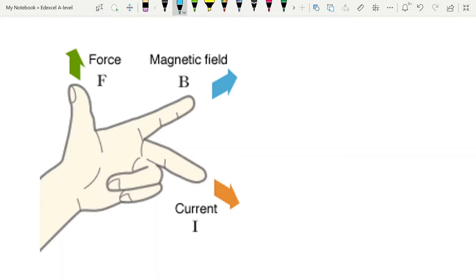Your second finger points in the direction of the current from positive to negative, your first finger points to the magnetic field from north to south, and then your thumb is going to give you the direction of the force or the direction the wire will move.